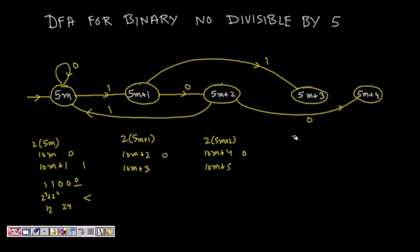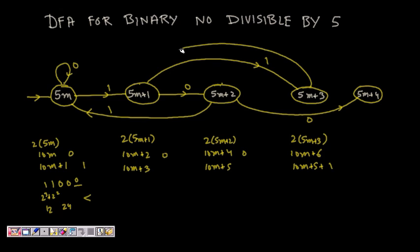For a number of the form 5m+3: multiplying by 2 gives 10m+6, which equals 10m+5+1, leaving remainder 1. So on seeing a 0, we go to the state for 5m+1. If we append a 1, it becomes 10m+5+1+1 = 10m+7, leaving remainder 2, so we go to the state for 5m+2.